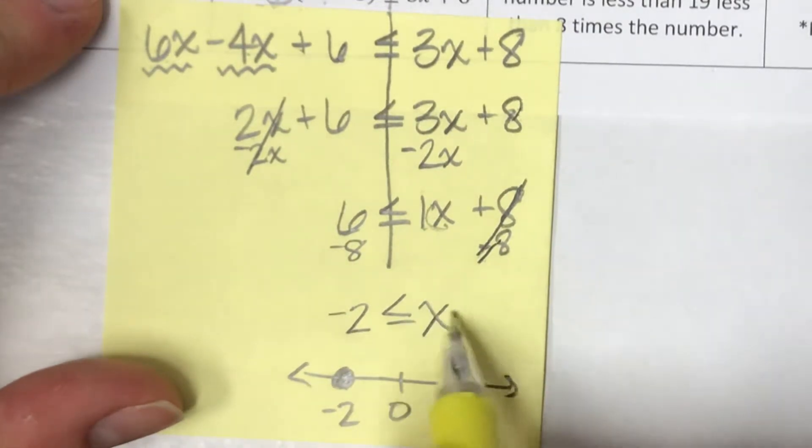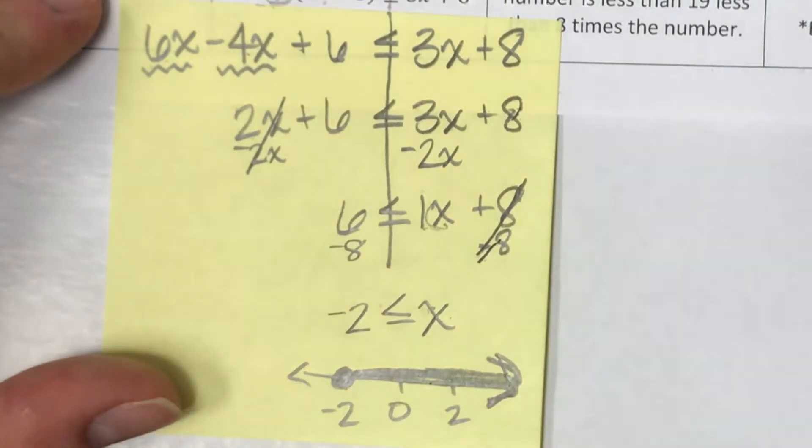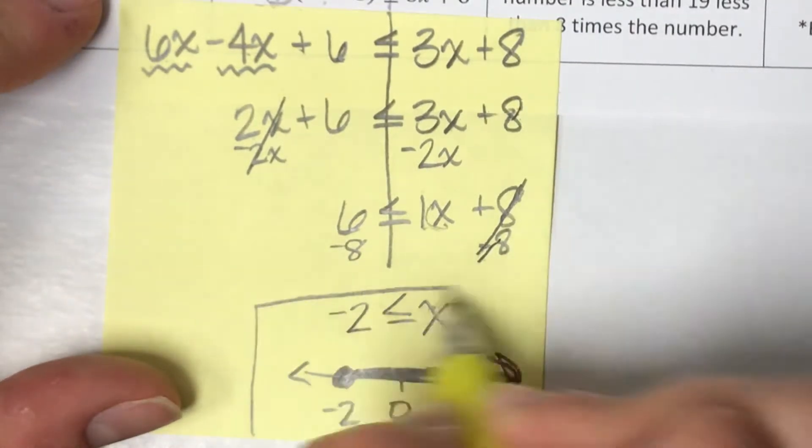If I'm going to graph this, it doesn't have to be a super fancy graph. It is a closed circle because it can equal negative 2. And then my x is on the bigger side of the inequality. So I want the numbers that are bigger than the negative 2. So numbers that are bigger than negative 2 are over here to the right. That's how we're going to graph that.